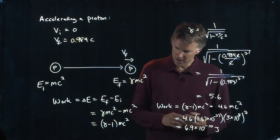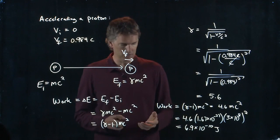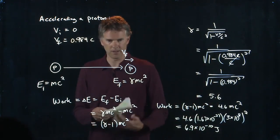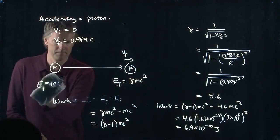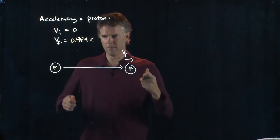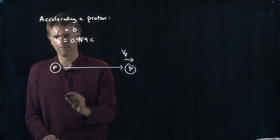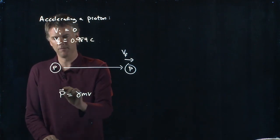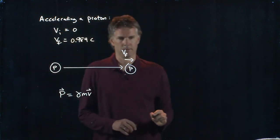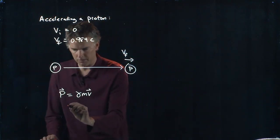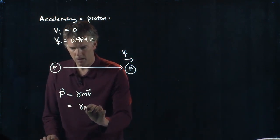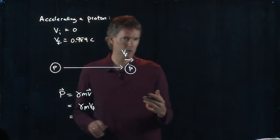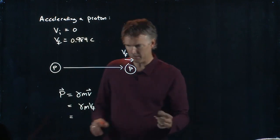Okay. Part B says, what would be the momentum of this proton? All right. That's not too bad. All right. Momentum is what? Well, momentum is gamma MV. Okay. So in this case, it's going to be gamma MV final.